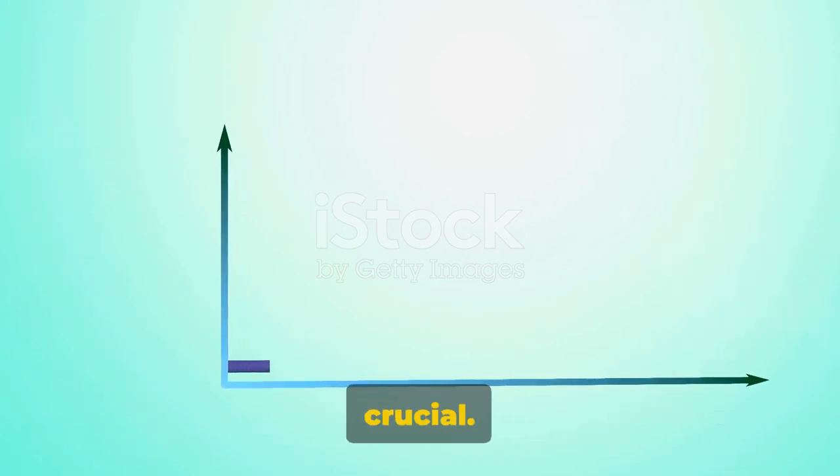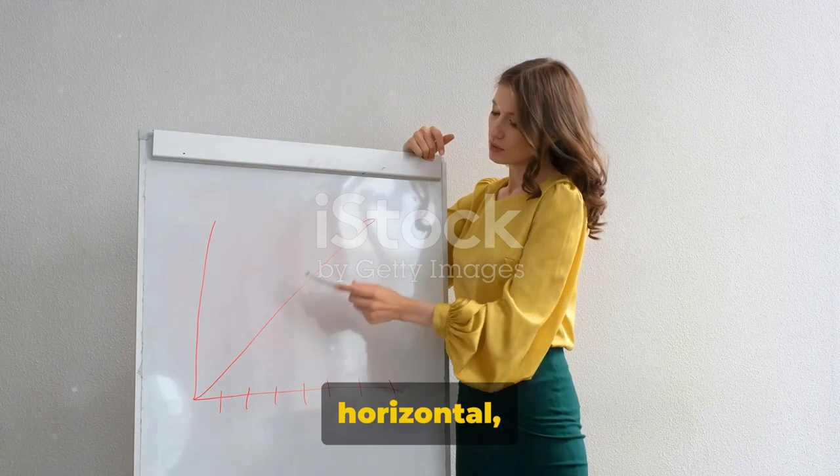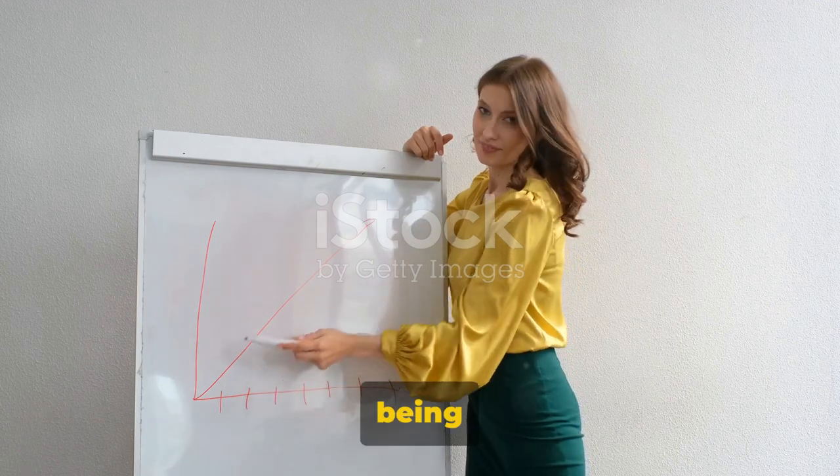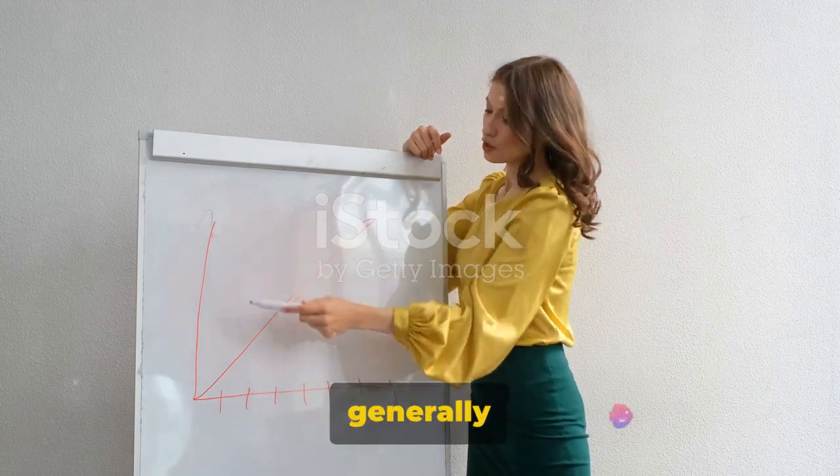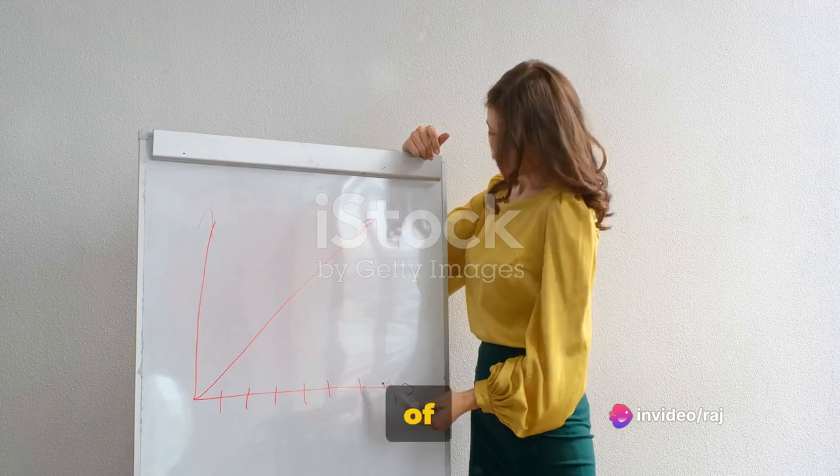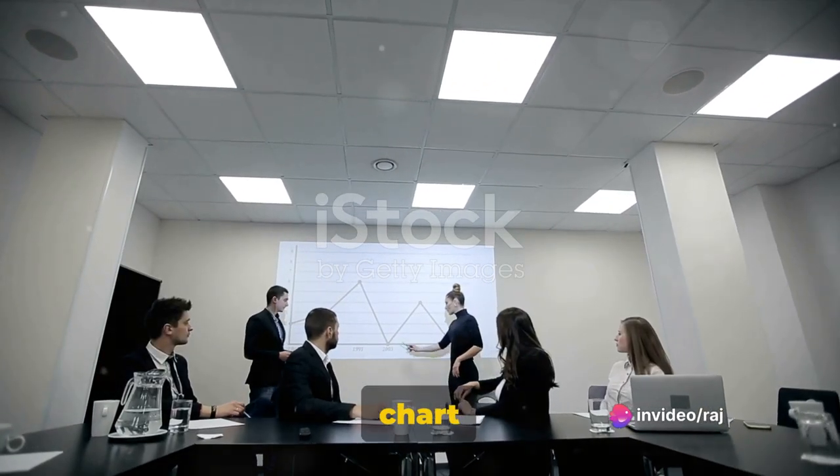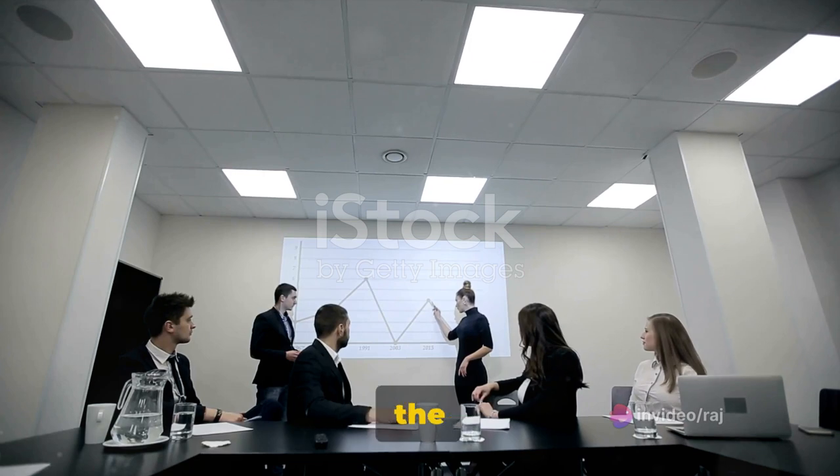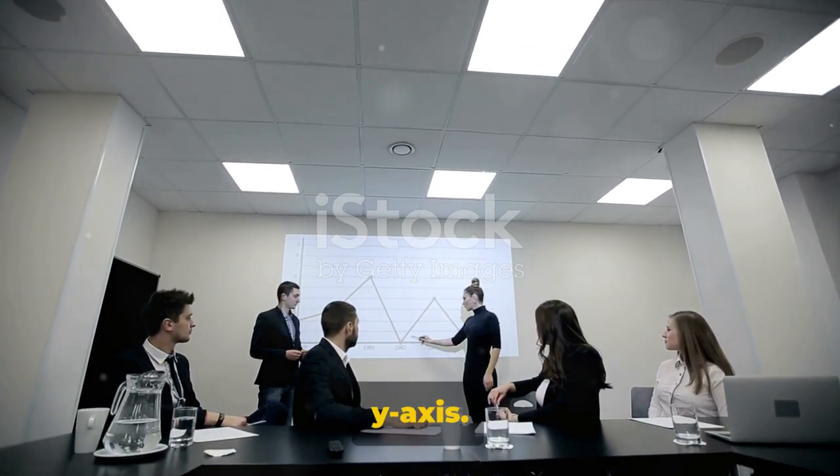The two axes of the chart are crucial. The x-axis, typically horizontal, shows the categories being compared, while the y-axis, generally vertical, displays a scale of values for the data points. Each bar on the chart represents a specific category from the x-axis with a value from the y-axis.